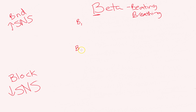To remember which receptors — type 1 or type 2 — are on your heart and which are on your lungs: you have one heart and two lungs. So beta 1 is going to be on your heart, and beta 2 is going to be on your lungs — that's a picture of two lungs there.